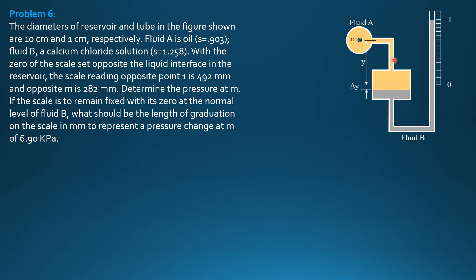The pressure at M is measured by means of this height in the scale here. This is the normal level when there is no reading at M. Based on the given information, opposite to 1, we have 492 mm. Opposite to M, we have 282 mm. And the distance from the zero and the normal level of fluid B to 1 is H.